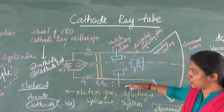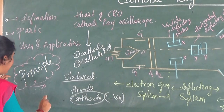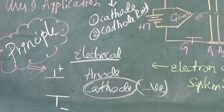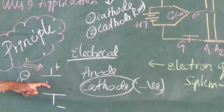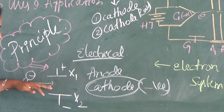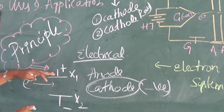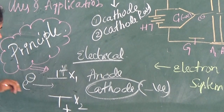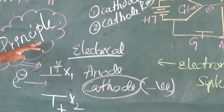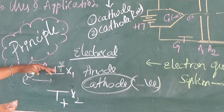Before going to the parts of the cathode ray tube, what is the principle on which it works? If we have some deflecting plates and I give some potential to the deflecting plates, if an electron is moving in between them — consider this as X1 and this as X2 — the electron will move towards X1 if X1 has positive potential, because the electron has negative charge and deflects toward the positive plate. If I change the polarity, the electron deflects towards X2. The main principle is the deflection of the electron due to an applied magnetic or electric field.